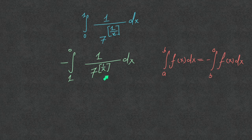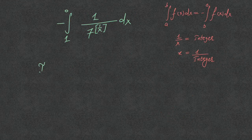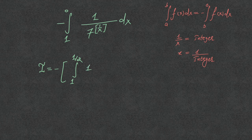Here, 1 upon x will always give us an integer, so x will always be equal to 1 upon an integer. The integral becomes minus, and integration starts from 1 to 1/2 of 1 upon 7 to the power 1, dx, because 1 upon x will give us the integer value 1 in that interval.